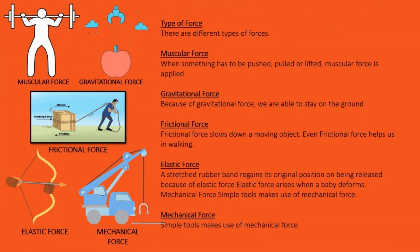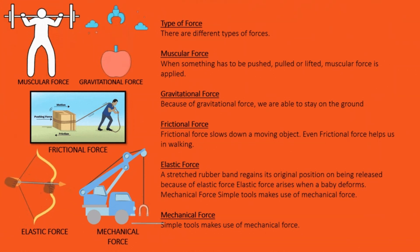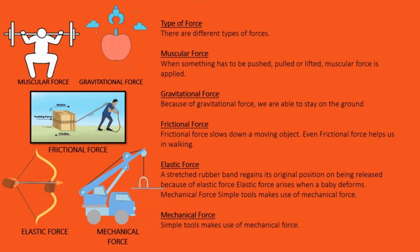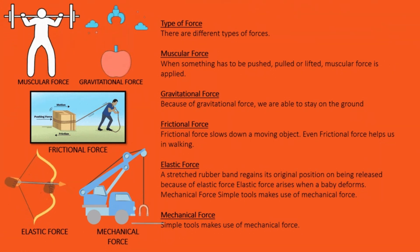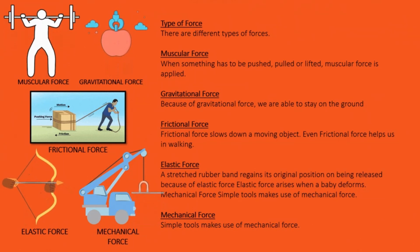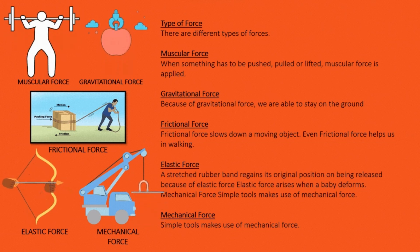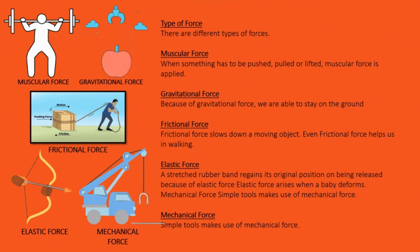Muscular Force: When something has to be pushed, pulled or lifted, muscular force is applied. Gravitational Force: Because of gravitational force, we are able to stay on the ground. Frictional Force: Frictional force slows down a moving object. Frictional force helps us in walking. Elastic Force: A stretched rubber band regains its original position on being released because of elastic force. Elastic force arises when a body deforms.